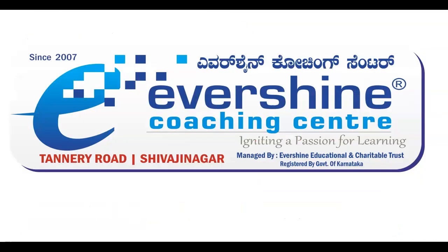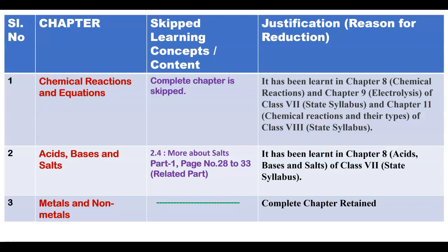Let's begin with the reduced syllabus. Here you can observe chapter 1 — Chemical Reactions and Equations. This complete chapter has been skipped. They have given the justification here; you can read those points. This complete chapter is skipped.